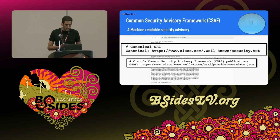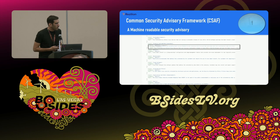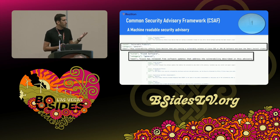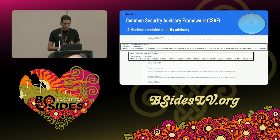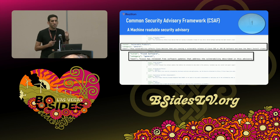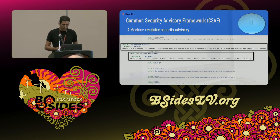The CSAF itself is a JSON file — the same security advisory content, but in a machine-readable format that allows for automation. It has various layers of metadata, but the key thing is that it can be automated. Cisco is doing a great job advocating for it; there was recently a summit, and I hope it gets more traction as time goes by.